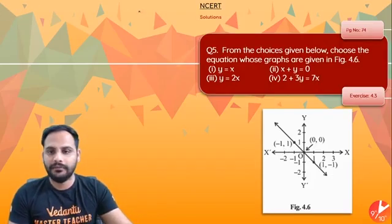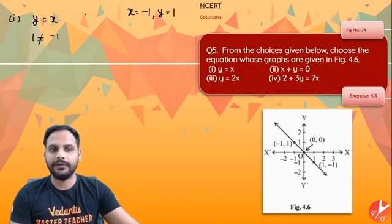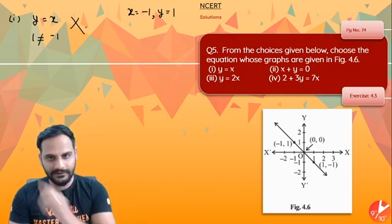So the first part, we will take the equation, the point we have taken is minus 1 comma 1, that means x is equal to minus 1, y equal to 1. So the first one, we have equation y equal to x. If I put x as minus 1, y as 1, you can clearly say they are not equal. So y is equal to x is not a correct answer.